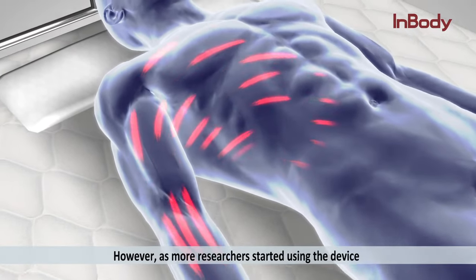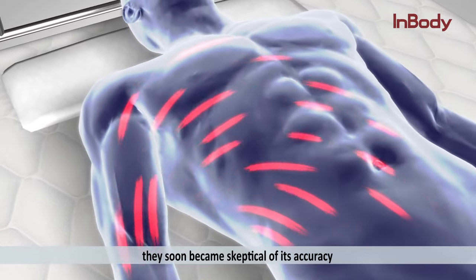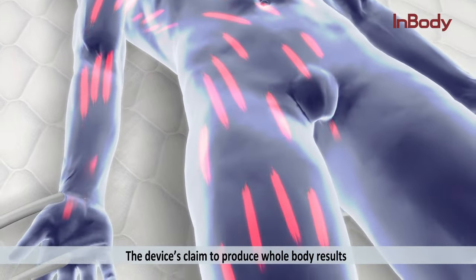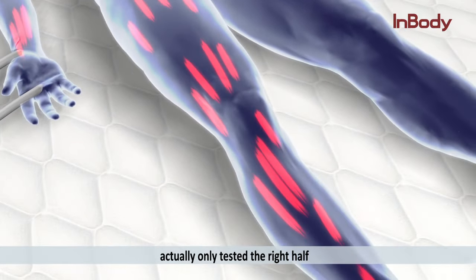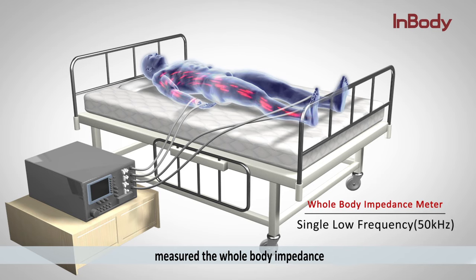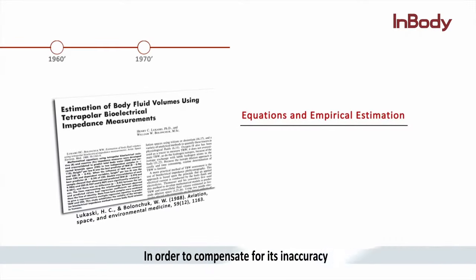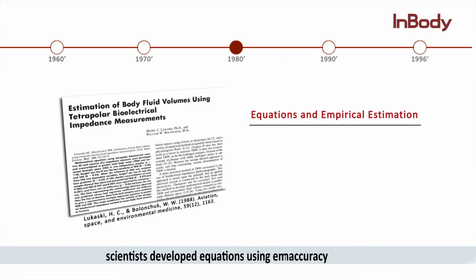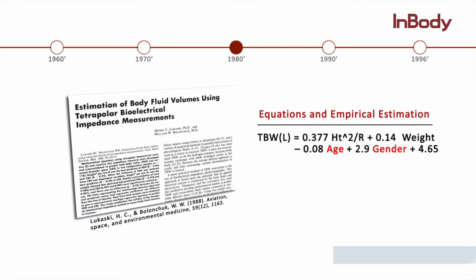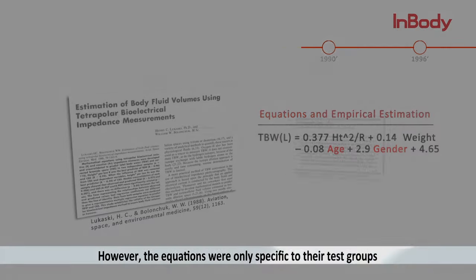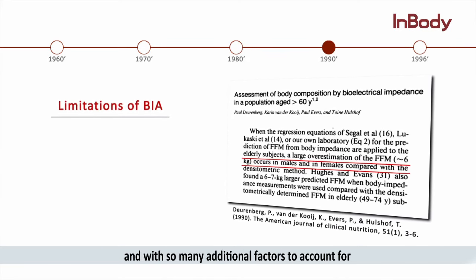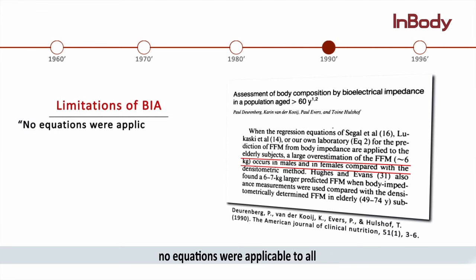However, as more researchers started using the device, they soon became skeptical of its accuracy. The devices claimed to produce whole body results but actually only tested the right half, and their use of a single low frequency inaccurately measured the whole body impedance. In order to compensate for this inaccuracy, scientists developed equations using empirical estimations such as age and gender. However, the equations were only specific to their test groups, and with so many additional factors to account for, no equations were applicable to all.